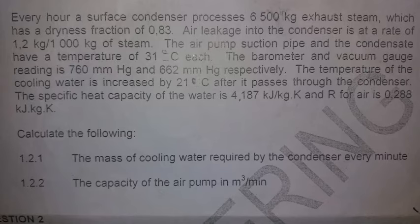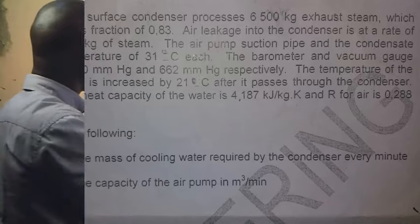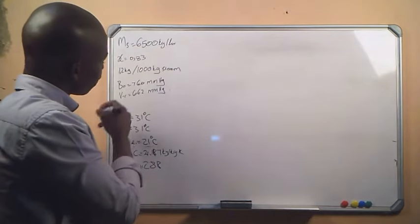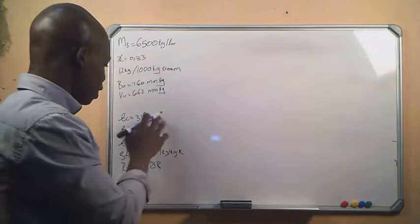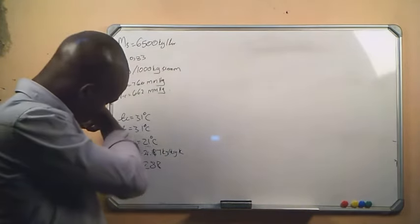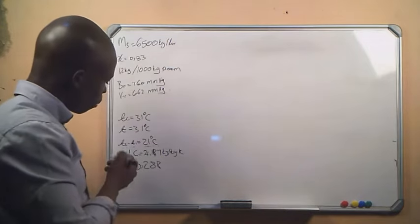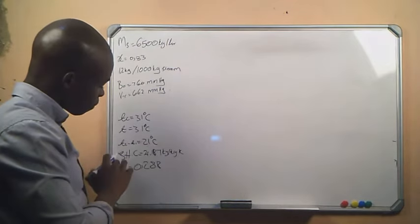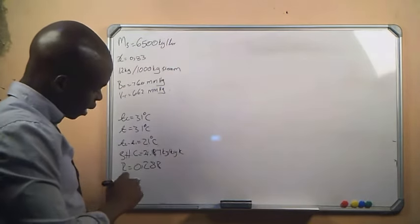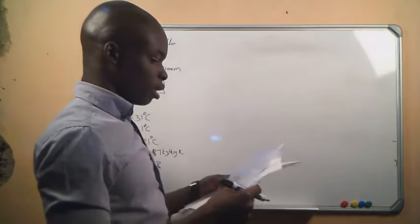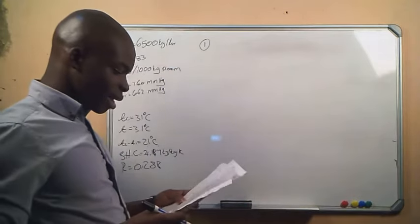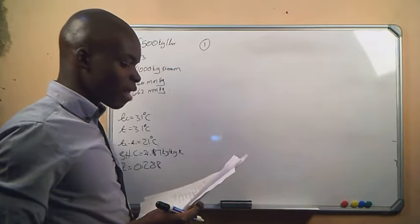They gave us the mass of steam, the drainage fraction, and the rate for the mass of steam and mass of air. They gave us the barometer and vacuum reading, the temperature of the condensate, the temperature at the suction pump pipe, the change in temperature, the specific heat capacity, and R. Question number one: calculate the mass of cooling water required by the condenser every minute.